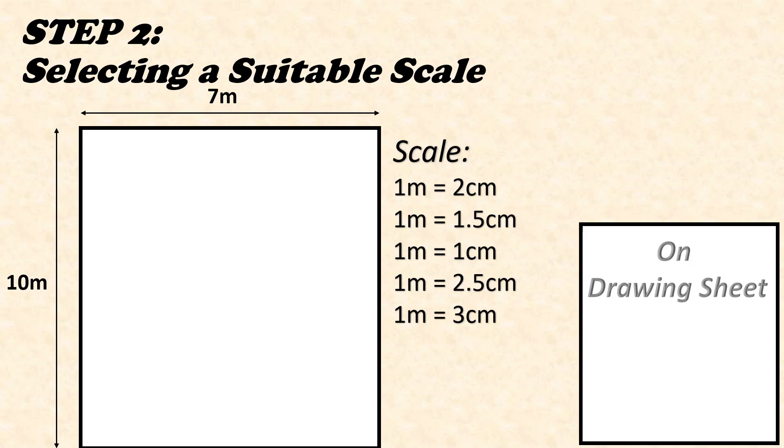Now suppose our suitable scale here is 1 meter equals 1 centimeter. So on our drawing sheet we are drawing a 7 centimeter by 10 centimeter line like this. Because we already have mentioned our scale 1 meter equals 1 centimeter, we'll mention our original unit on our drawing sheet, that is 7 and 10 meters.